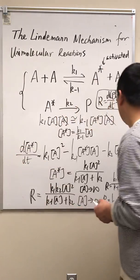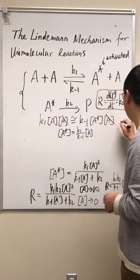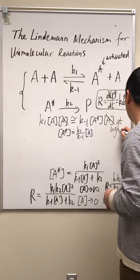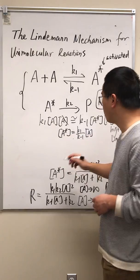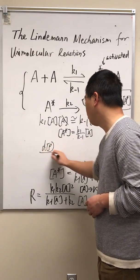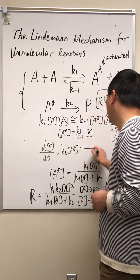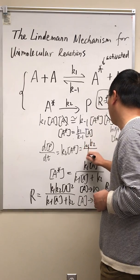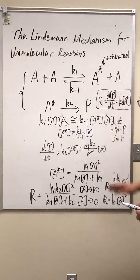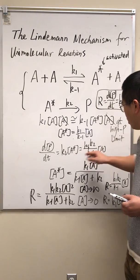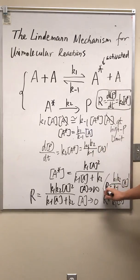Again, this is at high pressure limit. High P limit. Well, when we have this expression, again, how fast is the product produced? It's just K2 times A star and equals K1 K2 over K-1 times A. This is a first order reaction rate law. You can see it's 2. This is negative 1. And this is 1. So you get the same result here. First order.